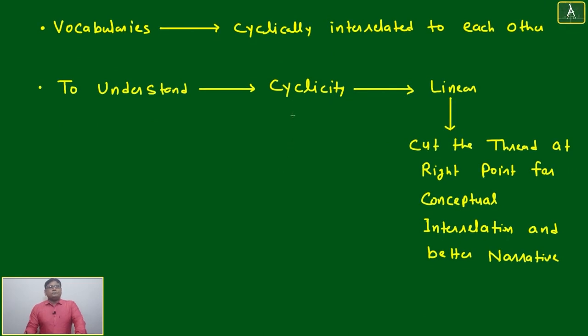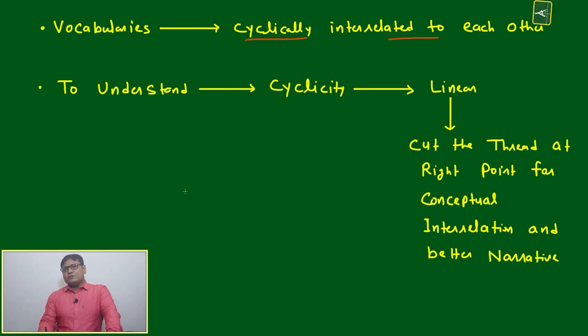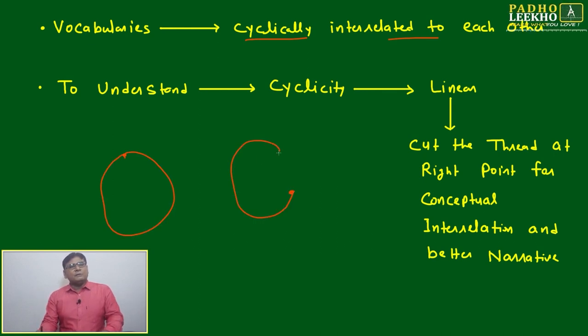Now vocabularies are cyclically interrelated to each other, means from any point you will be able to reach any point. Anyway, it is an idea. It is just an idea. You can correlate any idea with other, and once you are able to correlate, from any point you will be able to go to this point.